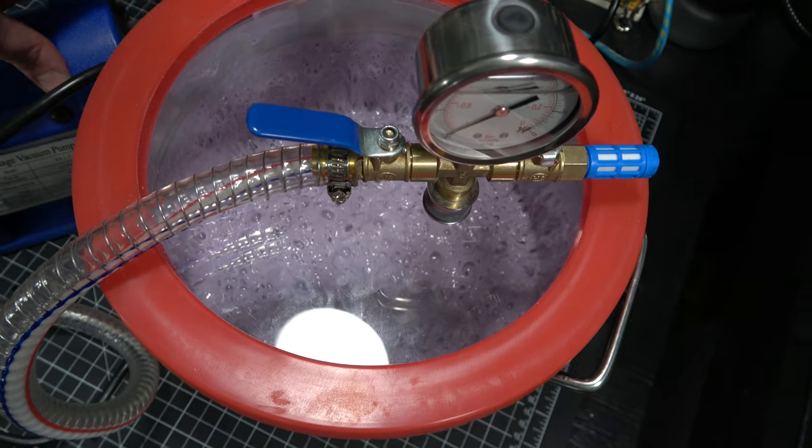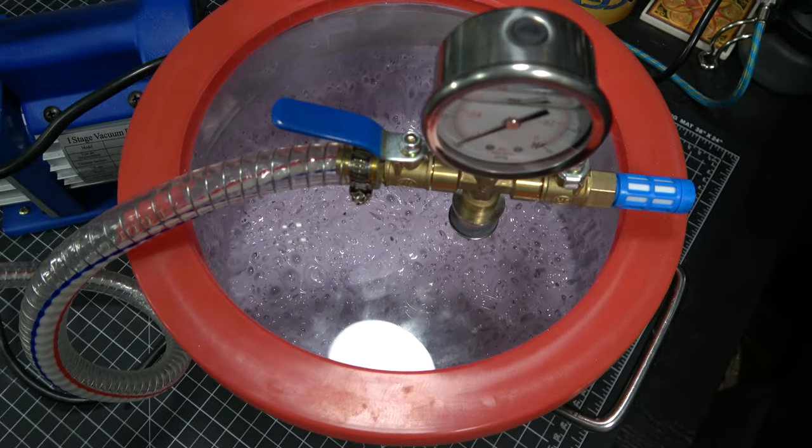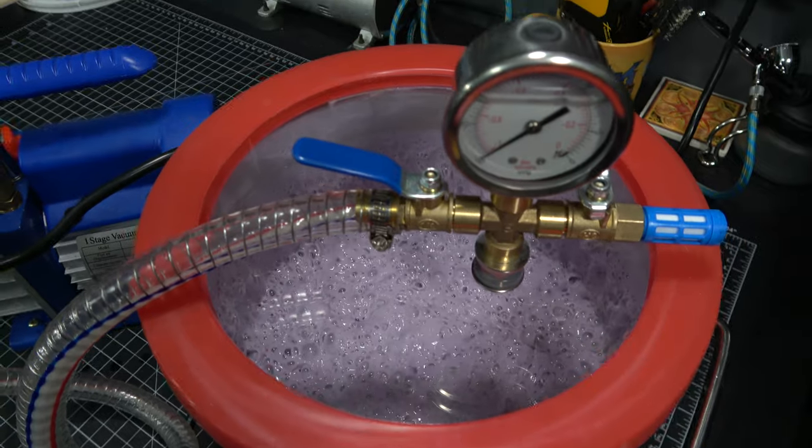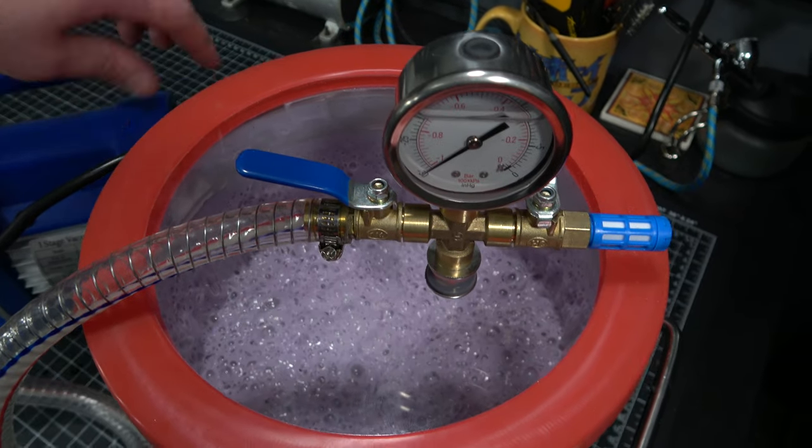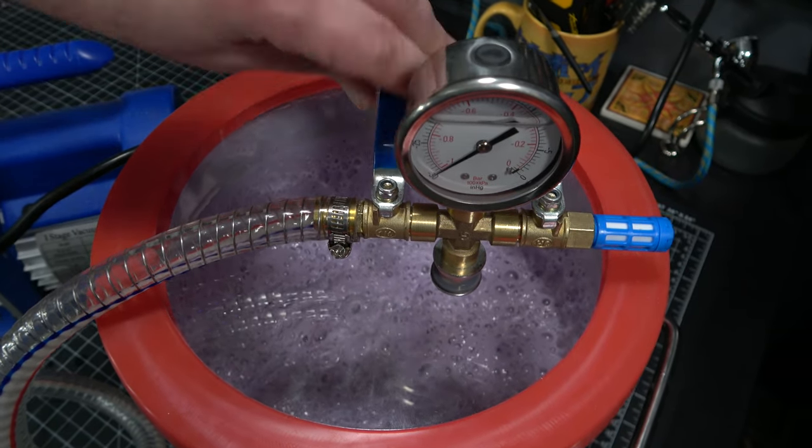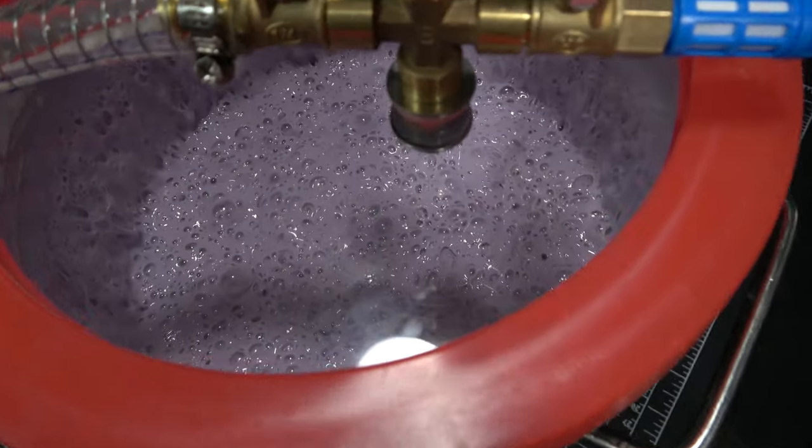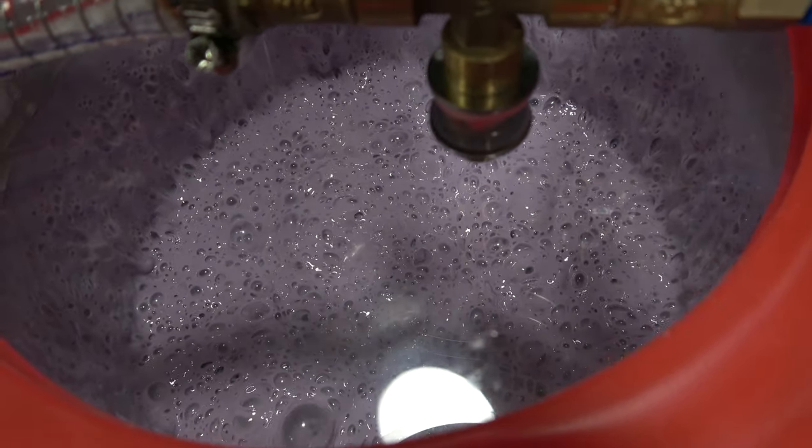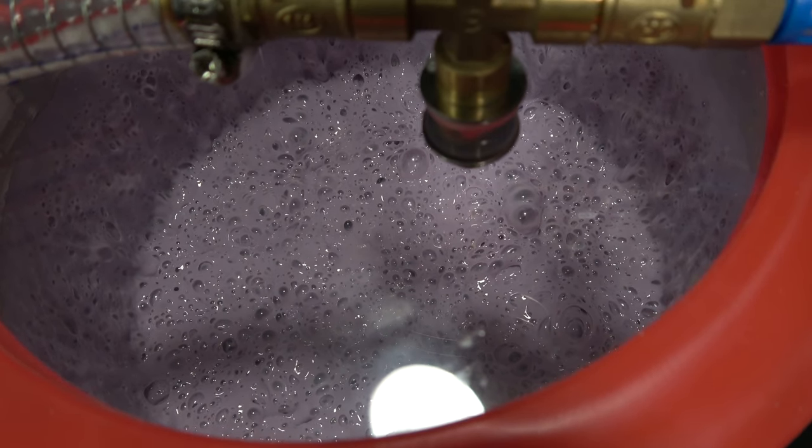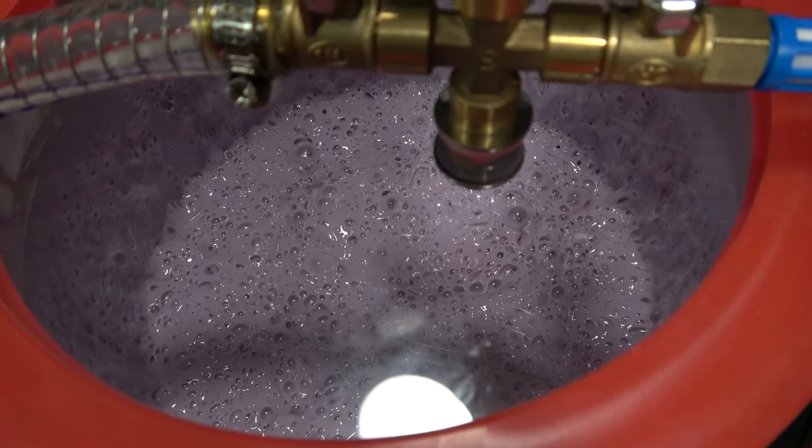Here you can see the silicone starting to fall as the vast majority of the air has been pulled out of it, just boiling away there. Turning off the pump, closing the check valve, and I'm just gonna let that sit for a little while. Get as much of that air out of there as possible. The more you let escape now, the easier it's gonna be later. The better your mold's gonna be.